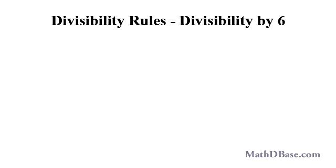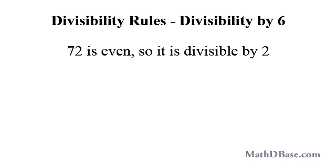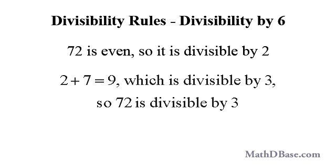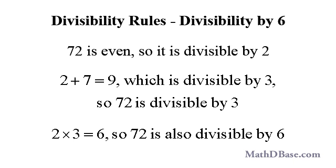If a whole number is divisible by both 2 and 3, then the number is divisible by 6. For example, 72 is divisible by 2 — we know that because it is even. And 72 is also divisible by 3 because the sum of its digits, 2 plus 7, equals 9, which is divisible by 3. So 72 is divisible by the product of 2 and 3, or 6, and 72 divided by 6 equals 12.